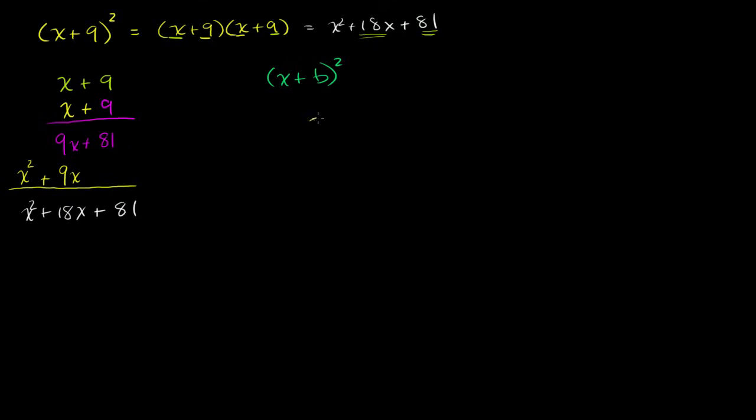And we're assuming b is a constant. So it would be x plus b times x plus a green b right there. So assuming b is a constant, b times b is b squared. b times x is bx, and then we'll do the magenta x. x times b is bx, and then x times x is x squared.